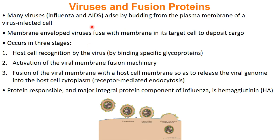Viruses also use proteins that are like SNARE proteins, because many viruses actually travel in your body through plasma membrane vesicles. When a virus infects a cell, that cell starts making viruses, which leave via vesicles of the plasma membrane. These vesicles then need to find a new cell to go and attack, and this happens in roughly three different phases.